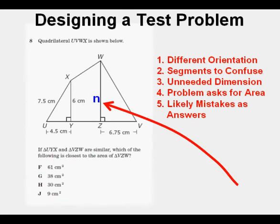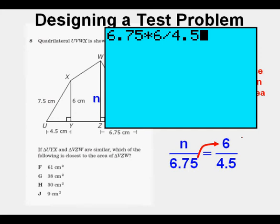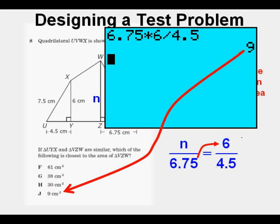First, we'll set up the proportion. This left side of triangle VZW is an unknown that we'll call N. And here's the proportion: N is to 6.75 as 6 is to 4.5. We can solve for N by cross multiplying the 6.75 by the 6, which gives us 6.75 times 6 divided by 4.5. And that gives us 9. And 9 happens to be the answer choice J.